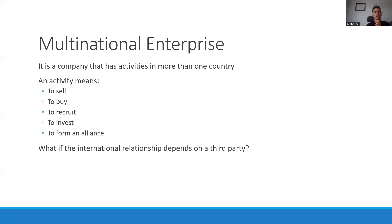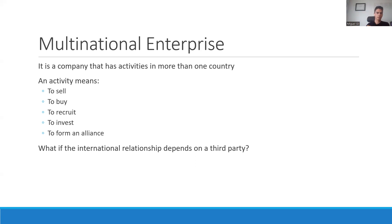So there are two clarifications: first, a company is not just for-profit — it's any type of organization. Second, activities means every type of activity. Write these in your notes. A third thing to remember: multinational is the same as international. The book uses the word multinational, but it means the same as international.